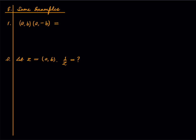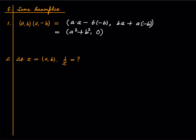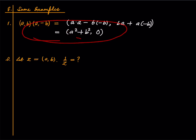Let us do some examples. Computing the product (a comma b) times (a comma minus b): this gives (a times a minus b times minus b) comma (b times a plus a times minus b), which equals (a squared plus b squared) comma 0. So the square of the modulus of the complex number is appearing here. This is no accident — we will develop more intuition for this later, but for now it is just a computation.